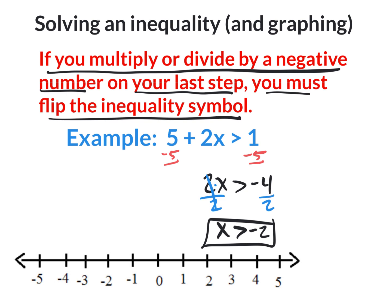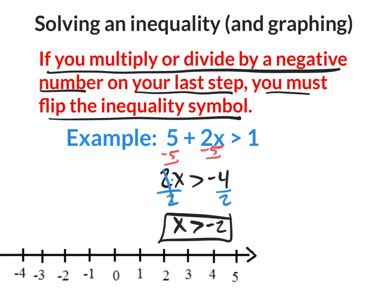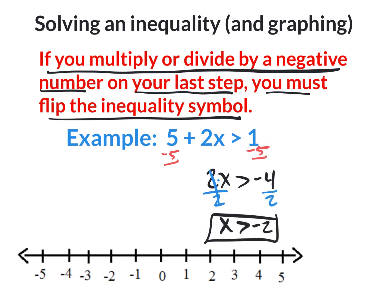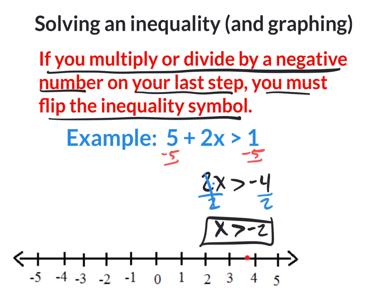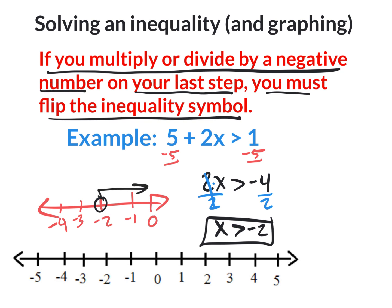Once you have your answer, graph it. Sketch a number line with negative 2 in the middle, negative 1 to the right, and negative 3 and negative 4 to the left. Open dot because it doesn't have a solid line underneath it. Greater than is to the right, so draw the arrow to the right. There's your graph.